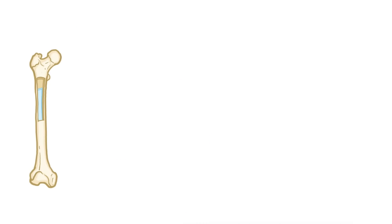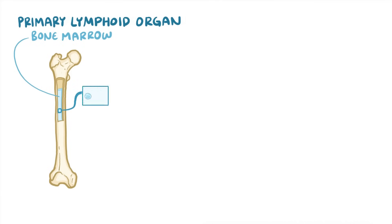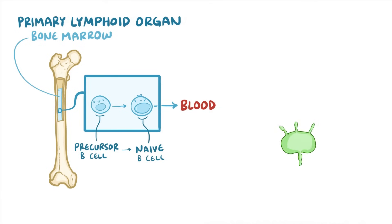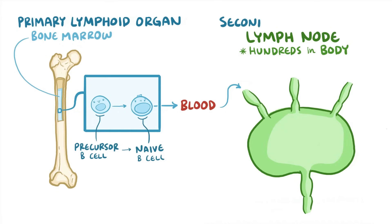B cell development starts in the bone marrow, which is a primary lymphoid organ. That's where young precursor B cells mature into naive B cells. The naive B cells then leave the bone marrow and circulate in the blood, eventually settling down in the lymph nodes. Humans have hundreds of lymph nodes scattered throughout the body, and they're considered secondary lymphoid organs.